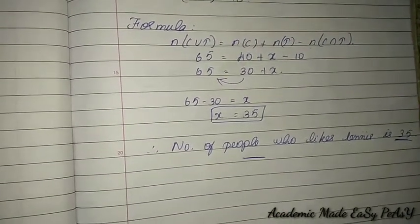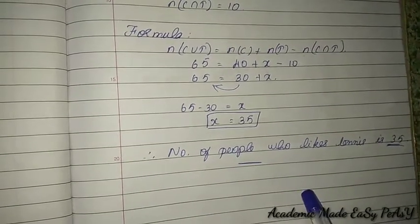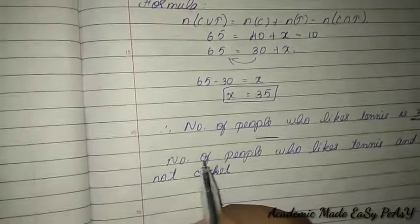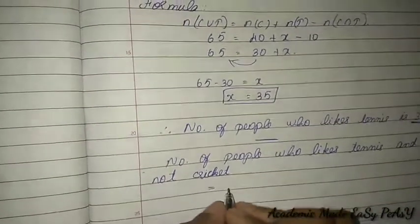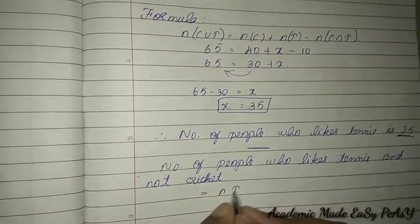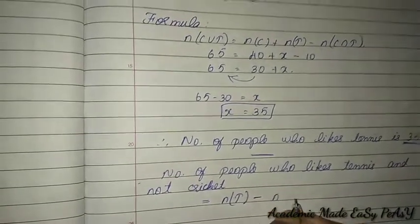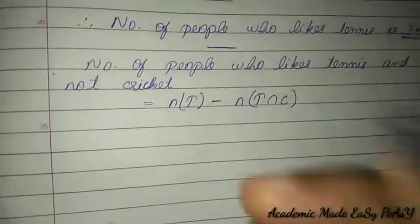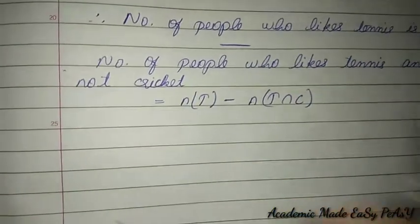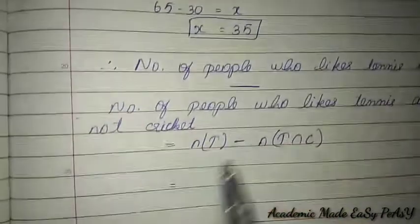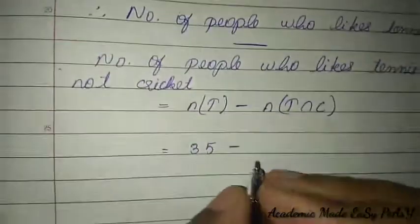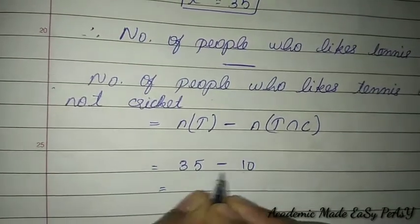For the second part, we need the number of people who like only tennis and not cricket. We subtract n(T∩C) from n(T): n(T) − n(T∩C) = 35 − 10 = 25. Therefore 25 people like tennis only and not cricket.